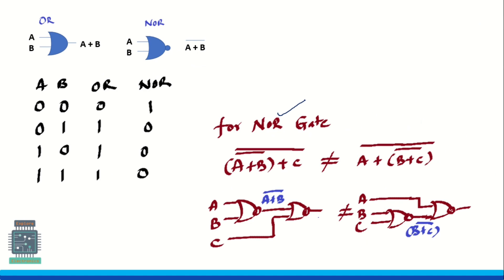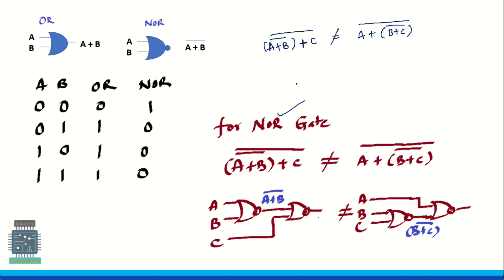Now let us consider the NOR gate. For the NOR gate, the associative expression is written as: first group A plus B bar, then take one more variable C and write it whole bar, since this is also a NOR gate — that is why whole bar comes; don't confuse with C bar, it is whole bar. Now we need to equate this to grouping B plus C together with bar, whole bar. These two are not equal.